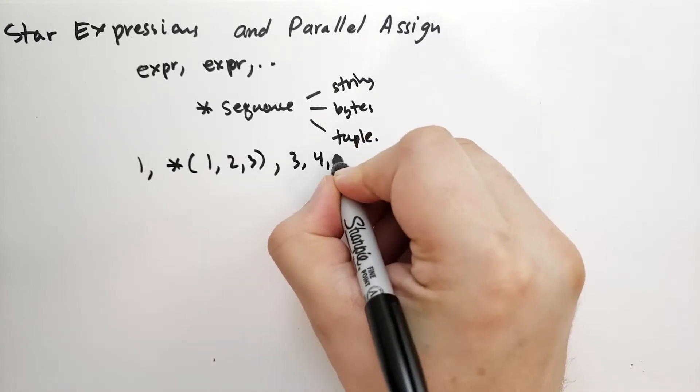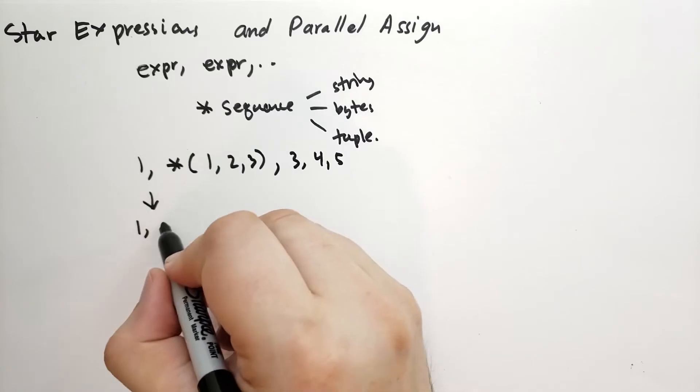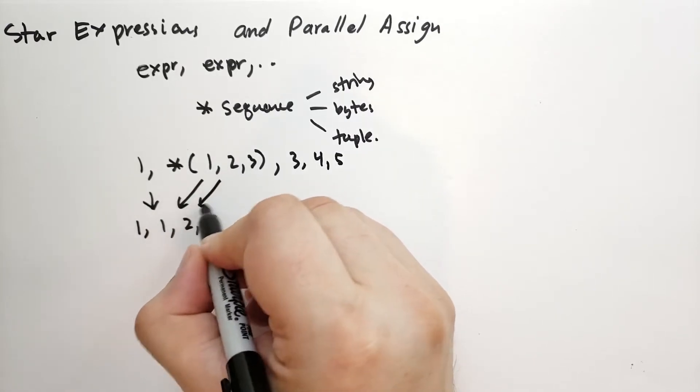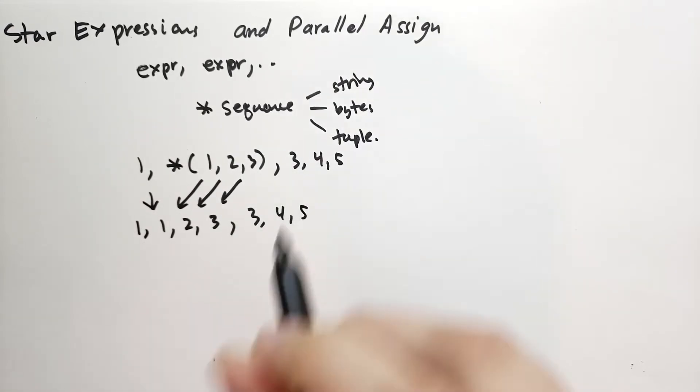So if we had 1, *[1,2,3], 3, 4, 5, what this will do is it'll turn this into the sequence 1, 1, 2, 3, and then followed by 3, 4, 5. And you can do this as many times as you want.